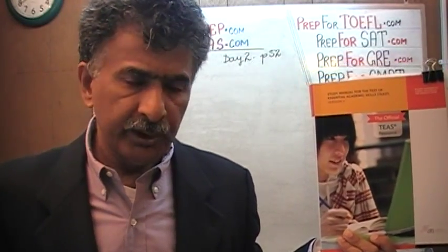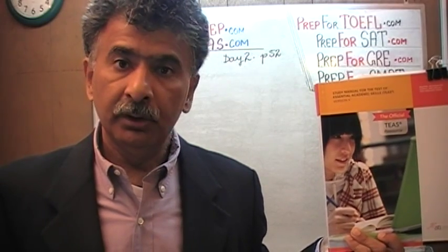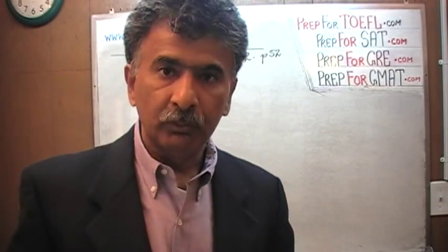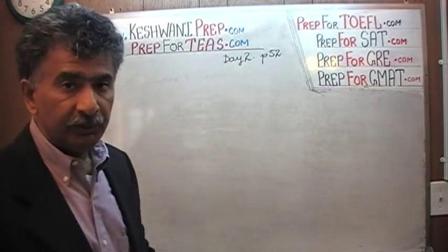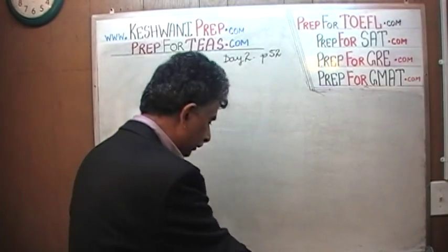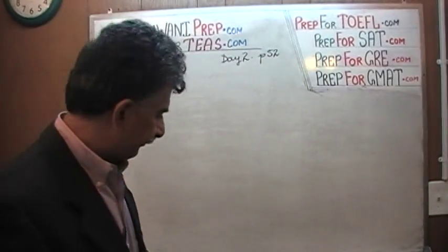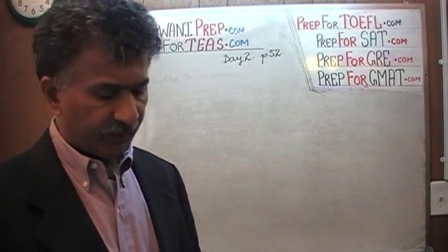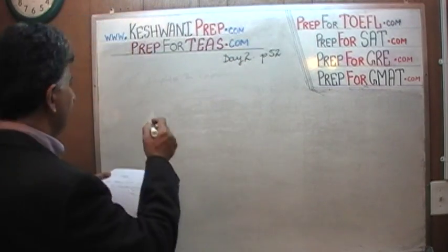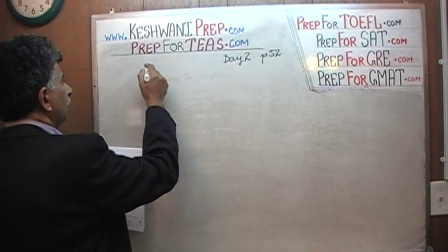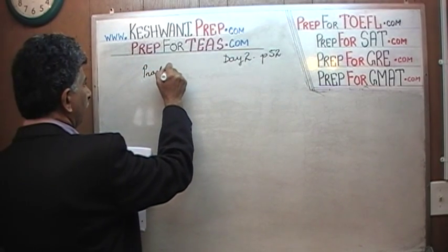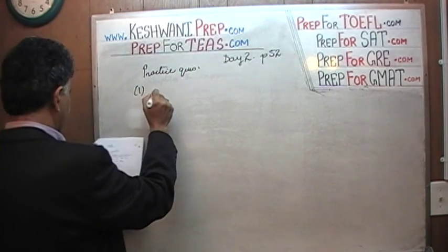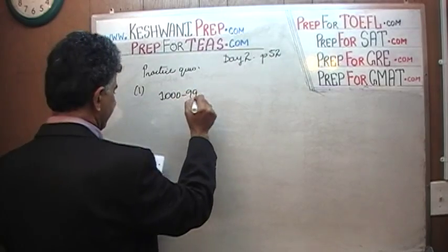If you do not own this book already, you are going to need it. The problems we are about to solve are the ones on page number 52. Please turn to it. Today is our lesson number 2 — we began yesterday. On page 52 we see very simple, straightforward subtraction problems. The very first one says: 1000 minus 99.